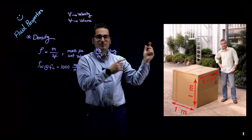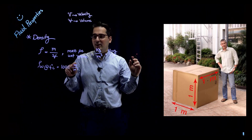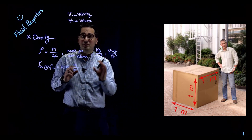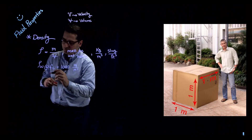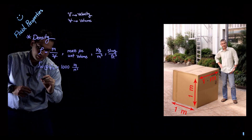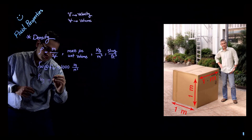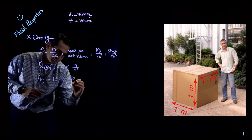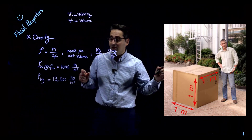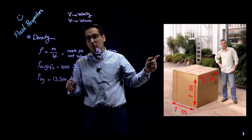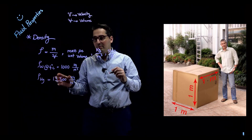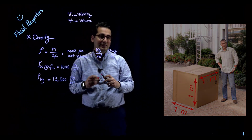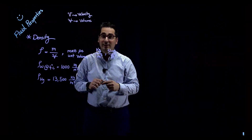If I fill up this one cubic meter box with water, the mass is going to be 1000 kilograms. Now the denser the material in the box, the heavier it's going to be. For example, the density of mercury (Hg) is 13,500 kilograms per cubic meter. This means that if I fill up the same one cubic meter box with mercury, the mass is 13,500 kilograms — more than 13 times higher than water.